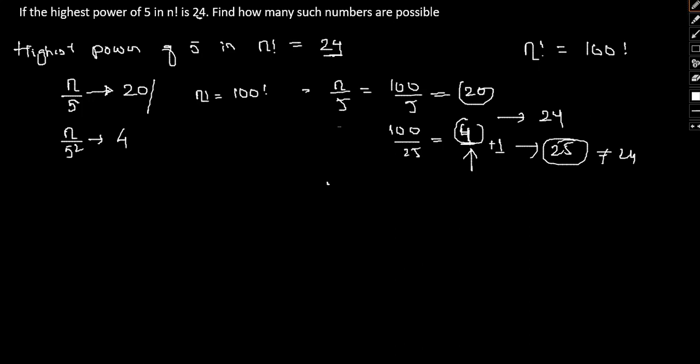So, let me take the value of 105. Say n equal to 105. And now, if I am looking to find the number of 5 in this case, this will again be, say, of 21.